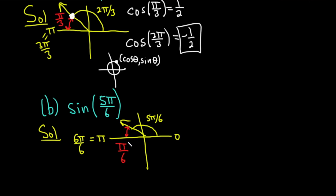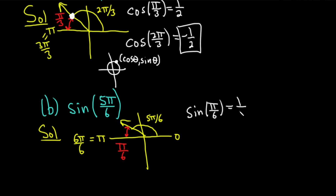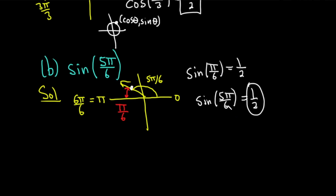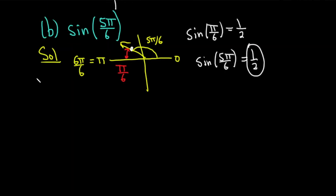A word of warning: some people like to do this using formulas, but those formulas don't always work because they depend on where the angle is. So in my opinion, it's just always better to draw a picture. The sine of pi over 6 is just equal to 1 half. And so now we have to think about the sine of 5 pi over 6. Remember, on the unit circle sine is the y-coordinate. The y-coordinate here is positive, so it's still going to be 1 half. There was no change in this case because the sine was already positive there. At 5 pi over 6, sine is still positive, so it's still 1 half.